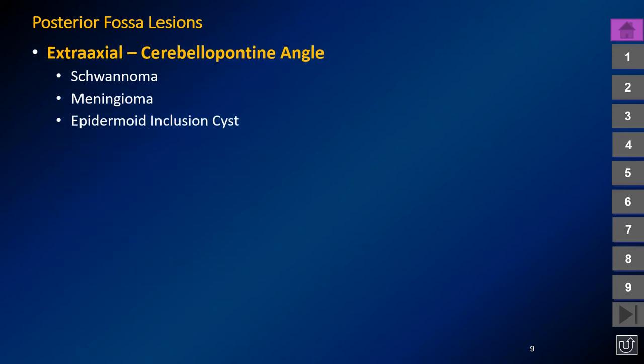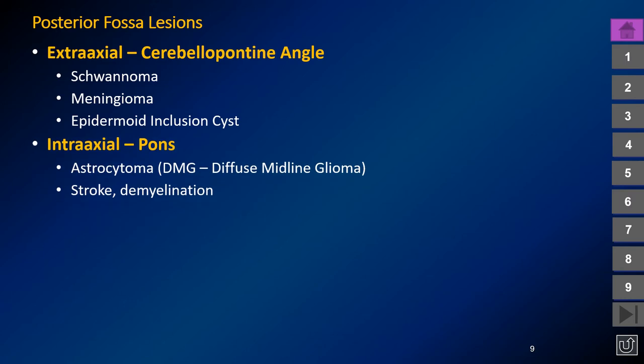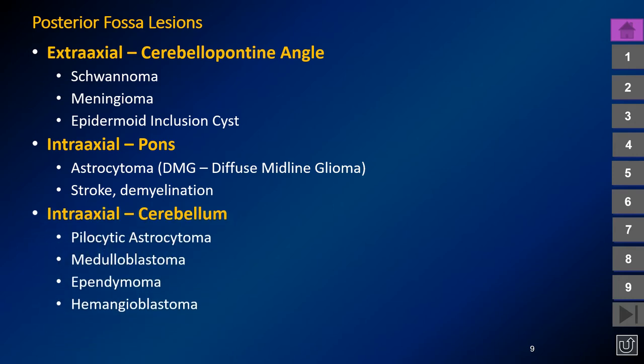Posterior fossa lesions may be extraaxial, as we're going to begin with. They may be intraaxial involving the pons, such as diffuse midline glioma, and also demyelinating disease and vascular disease. And they may be intraaxial in the cerebellum, such as pilocytic astrocytoma, medulloblastoma, ependymoma, and hemangioblastoma.